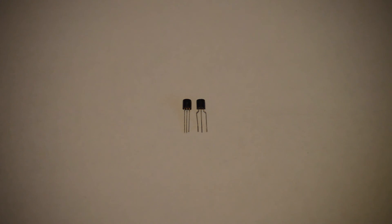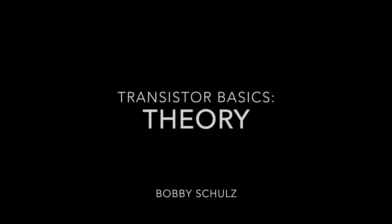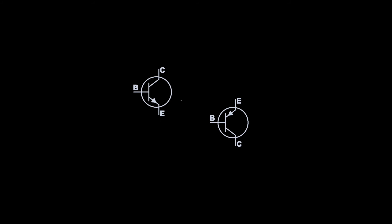Let's talk about how these work and a little about their application. Here we have the transistor symbols: over here we have an N-type, which is an NPN, and over here we have a P-type, which is a PNP. These look very similar, but there's one difference - with the PNP the arrow is pointing inward, and with the NPN the arrow is pointing outward.